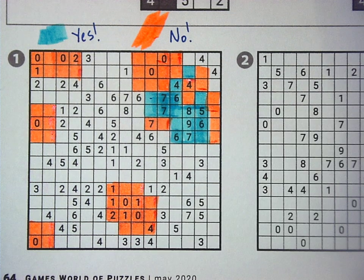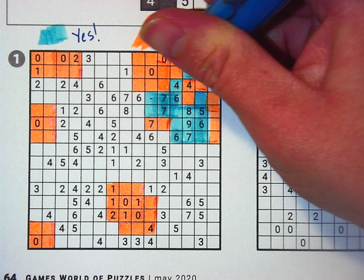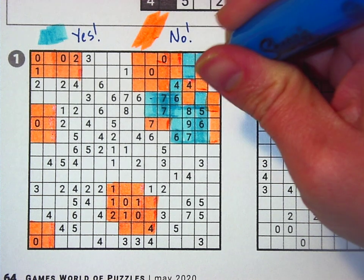So since there are only one, two, three spots here left for that four and for this other four.